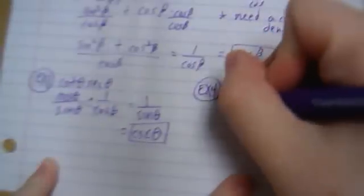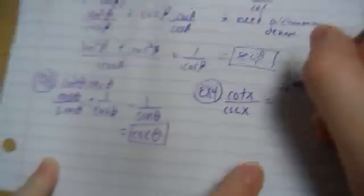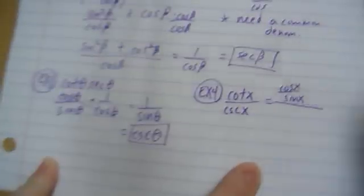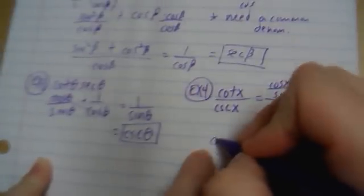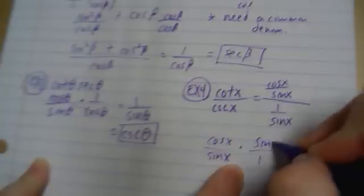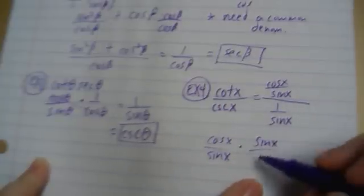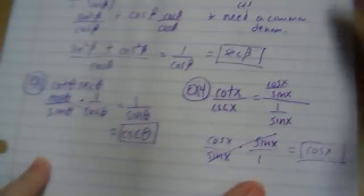Your homework is going to be more of this caliber — there are some more difficult ones but similar. Example 4: I have cotangent x over cosecant x. Let's get them in terms of sine and cosine. Cotangent is cosine over sine, and cosecant is 1 over sine. When dividing by fractions, flip the second and multiply. Flipping the second gives sine over 1, the sines cancel, and I'm left with just cosine x.